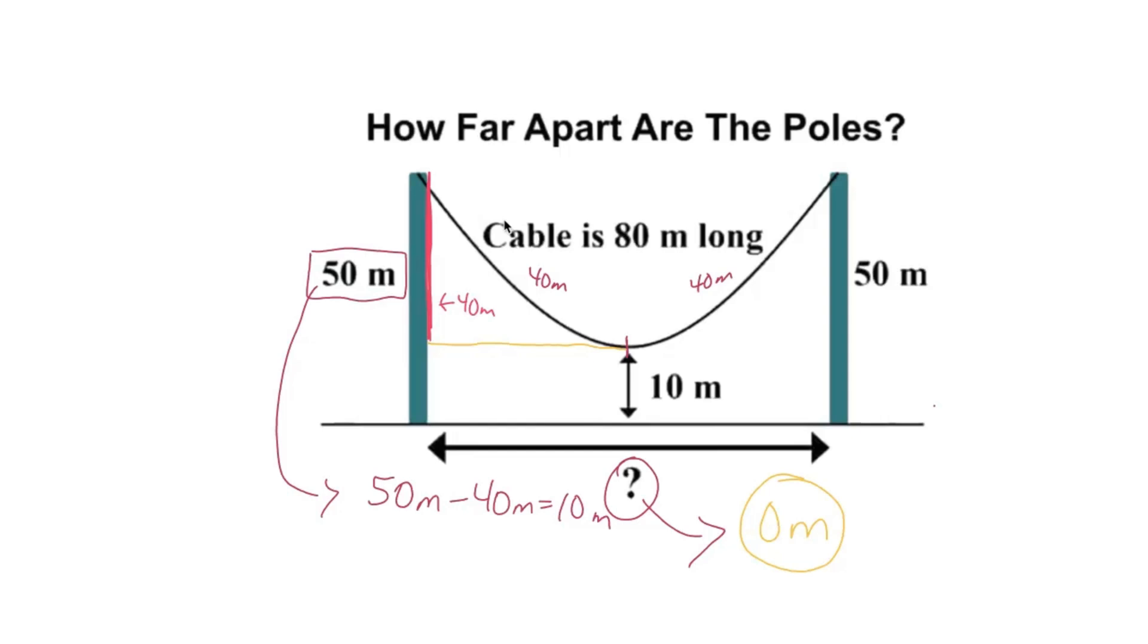That means that the poles are actually right next to each other, and so the distance between them has to be zero meters in order for that cable to be directly parallel to the poles.